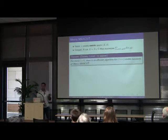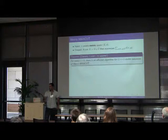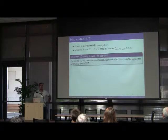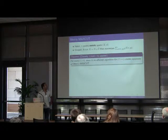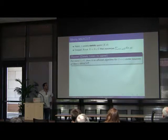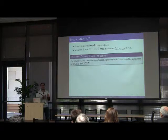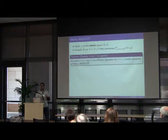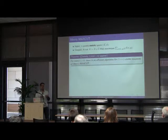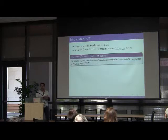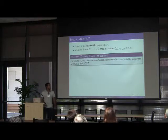Here we have a rather strong theorem claiming the following. That for every epsilon greater than zero there is an efficient algorithm that correctly solves all one plus epsilon stable instances for metric maxcat. And this is in some sense the best we can hope for because this problem is NP-hard so we know that one stable instances cannot be solved. I mean every instance is one stable. And we know that we can solve these instances so this result is optimal in some sense.